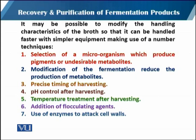The first technique is the selection of the microorganism which produces pigment or undesirable metabolites. The second is the modification of the fermentation to reduce the production of unwanted metabolites. The third is having the precise timing of harvesting.